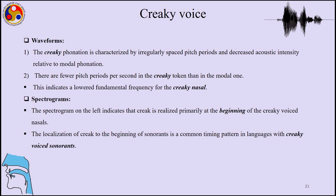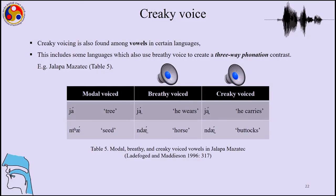Something very important when talking about phonation is the localization of these aspects — phonation is localized to a certain part of the vowel or nasal. Creaky voicing is found among vowels in certain languages. Jalapa Mazatec has a three-way phonation contrast, and we will play the breathy voiced, modal voiced, and the creaky voiced examples.